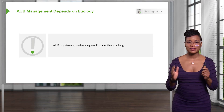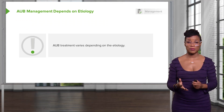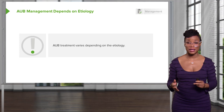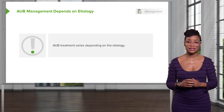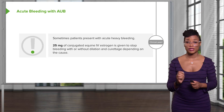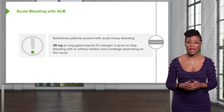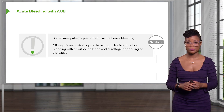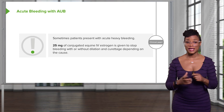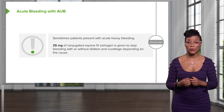AUB management really depends on the etiology. First, you have to determine what type of AUB you think the patient has, then evaluate her with a good general physical exam and GYN exam after obtaining a very thorough history. Then you can manage based on the etiology. If a patient comes into the emergency room with acute bleeding, you can stop acute heavy bleeding with 25 milligrams of conjugated equine IV estrogen. Sometimes these patients are taken to the operating room for dilation and curettage to remove some of the endometrium so that the bleeding is less. This is normally only given to a young, healthy patient who has no other medical comorbidities, which would be a contraindication to estrogen.